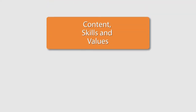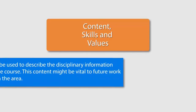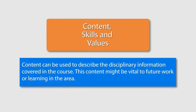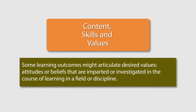Content, skills, and values: these three areas can be used to identify and describe different aspects of learning that might take place in a course. Content describes the disciplinary information covered in the course. Skills refer to the disciplinary or generalizable skills students should employ by the conclusion of the class. Some learning outcomes might articulate desired values, attitudes, or beliefs imparted or investigated in the field or discipline, focusing on how knowledge or skills will enrich students' experiences throughout their lives.